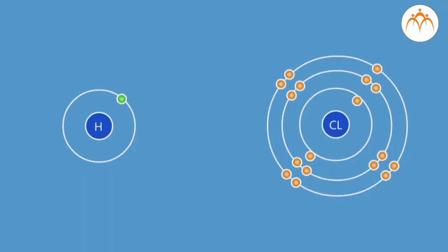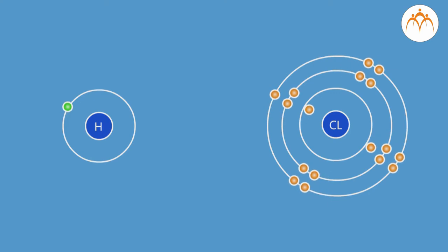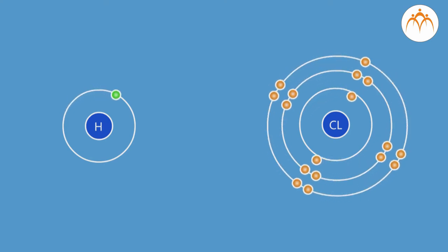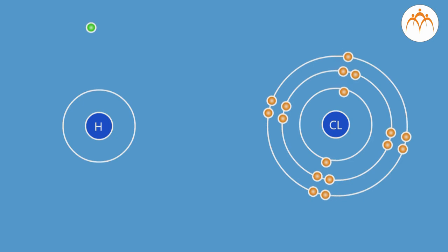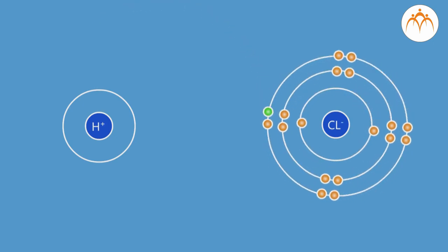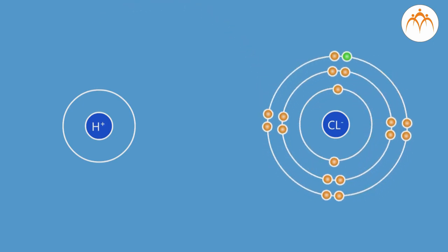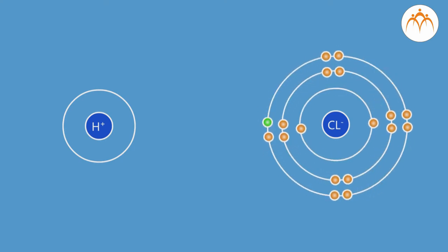Try and define valency now. We can define valency as the number of electrons that an atom of an element donates, accepts, or shares in order to complete a duplet for the first shell only, or an octet for other shells.